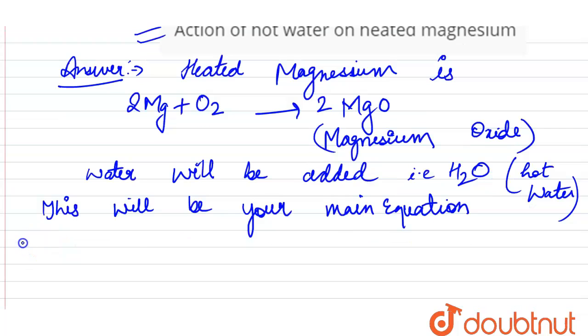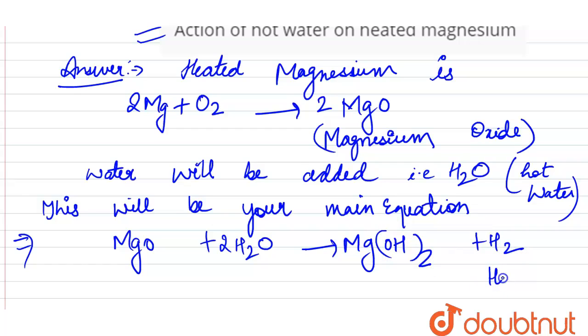Which is MgO plus 2H2O gives rise to Mg(OH)2 plus H2. This is hydrogen.